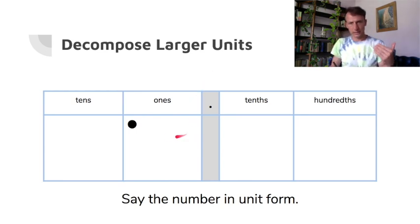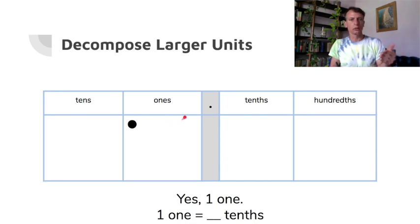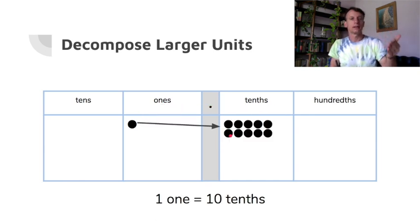Let's warm up and get our heads back in math mode. Say this number in unit form. There is one and we're in the ones place, so it's one one. Now how many tenths is that? Refer back to money — one dollar would be how many dimes? Ten dimes. So it's ten tenths.